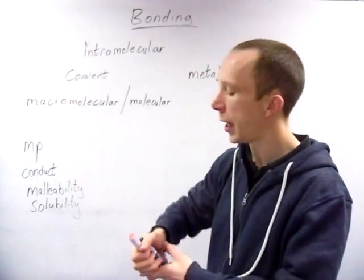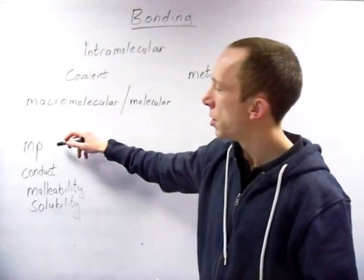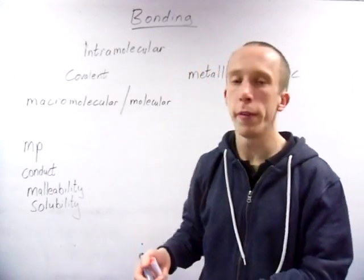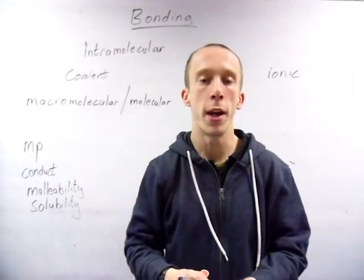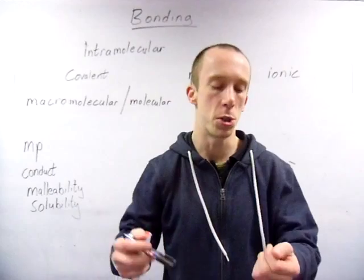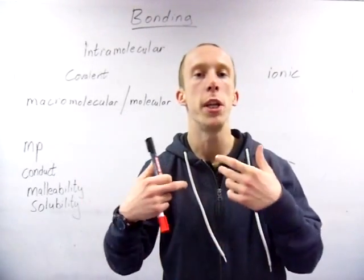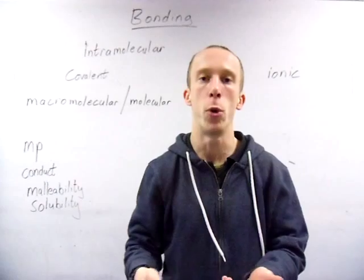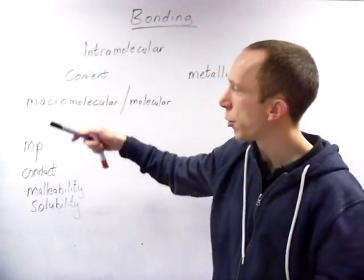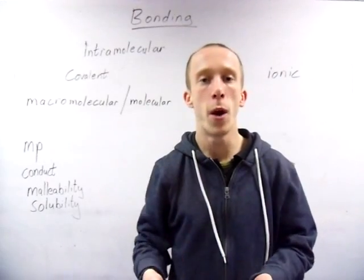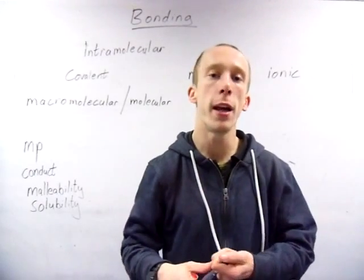So macromolecular: melting point very high. Why? Because covalent bonds are strong and there are lots of them. So there are lots of strong covalent bonds which you need to put in energy to break. Therefore the melting point is high. Do macromolecular compounds conduct? No.